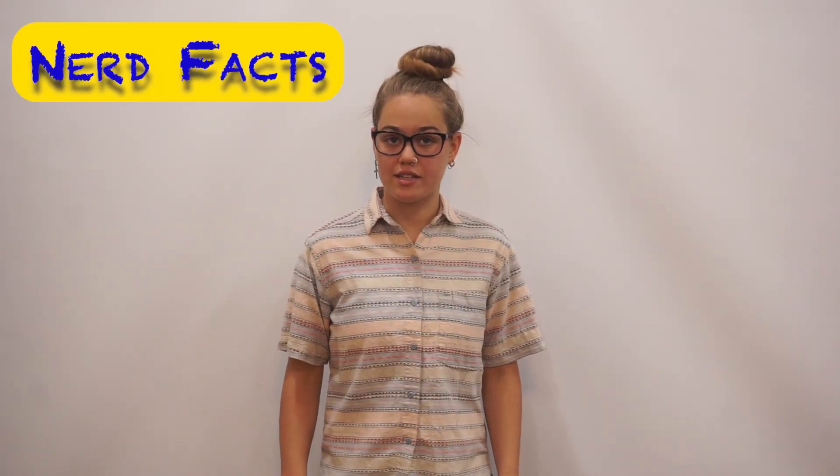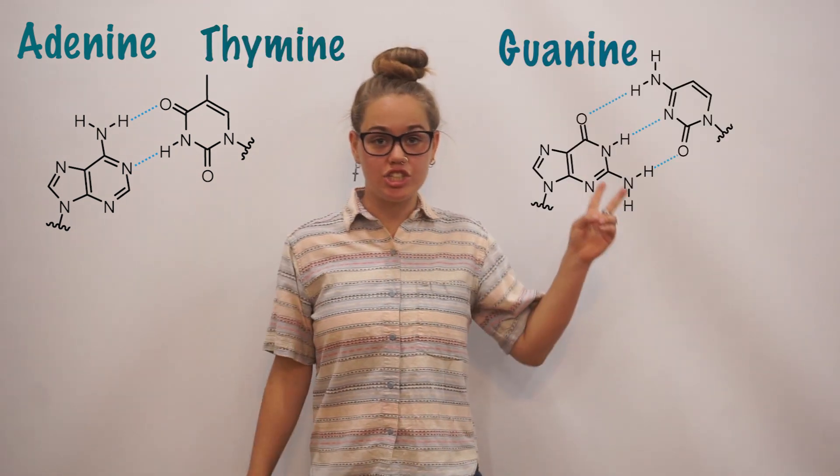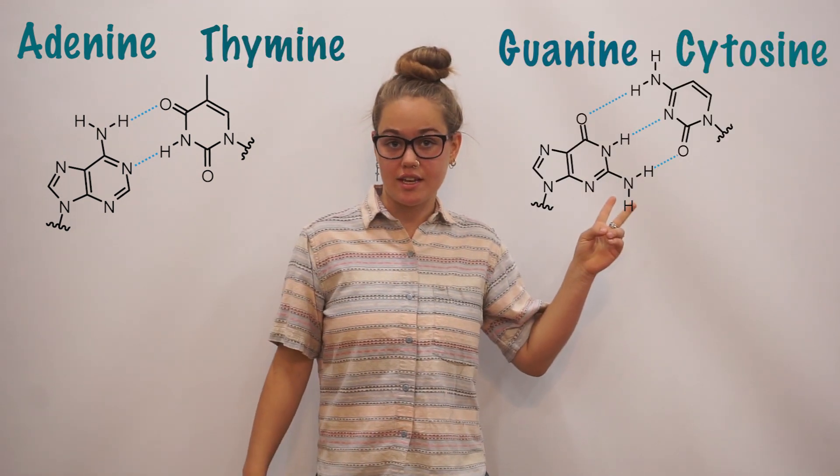In DNA, there are four nitrogenous bases. A pairs with T and G with C. If the wrong bases pair, you get a mutation.